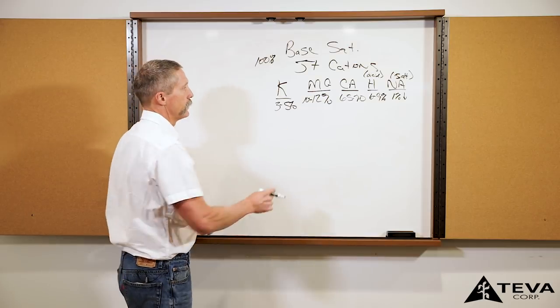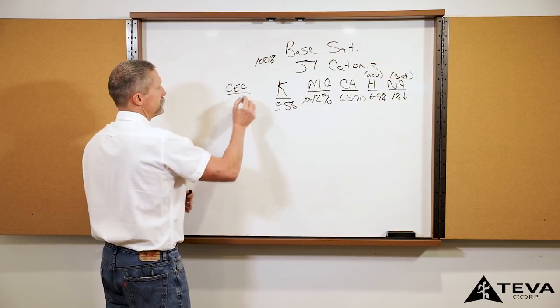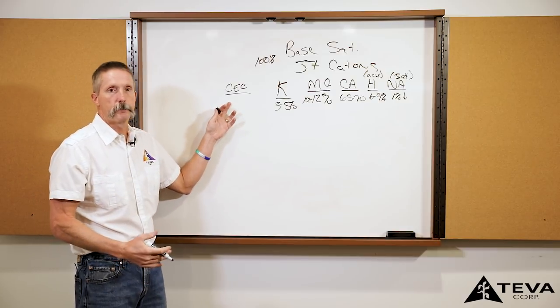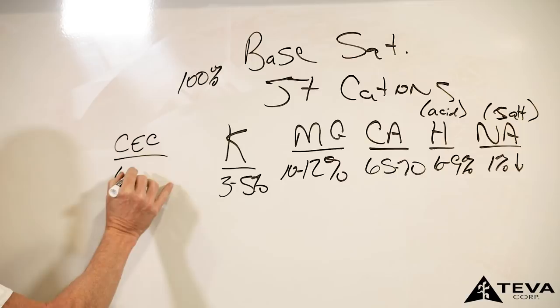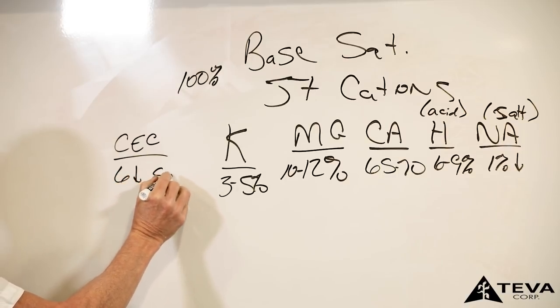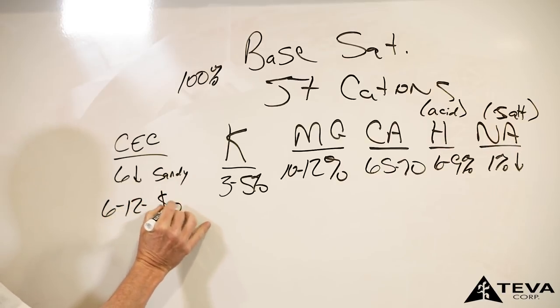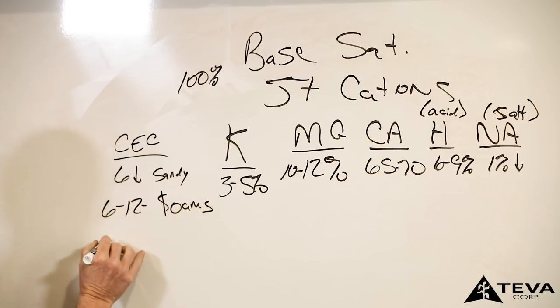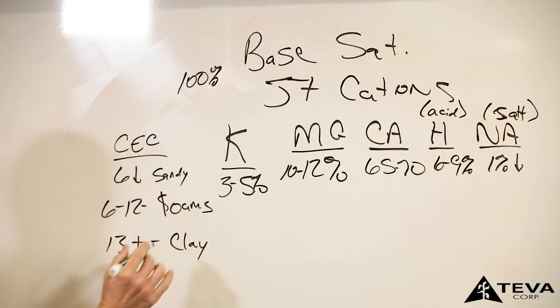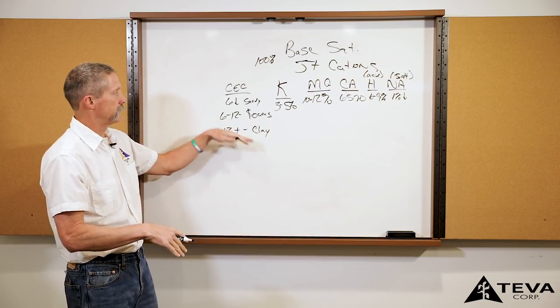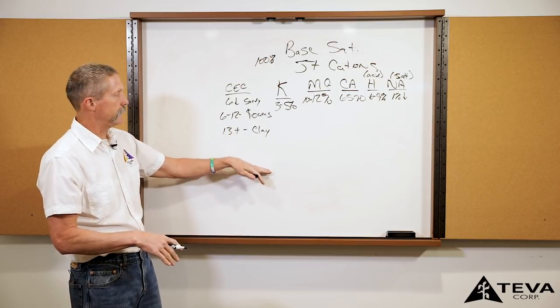The next thing that I want to look at on a soil test is the CEC. This tells me what your dirt is made up of. Lower CECs, if you're looking at maybe six and below, you're looking at sandy. Six to 12, you're in your loams, and then maybe 13 plus you're getting more into clay.